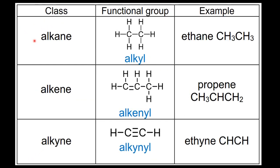Next we look at all the classes and functional groups you need to know for standard level chemistry. The first example is the alkanes, which have carbon-to-carbon single bonds — an example is ethane. Next we have the alkenes, which have carbon-to-carbon double bonds — an example is propene. Next we have the alkynes, which have a carbon-to-carbon triple bond — an example is ethyne.